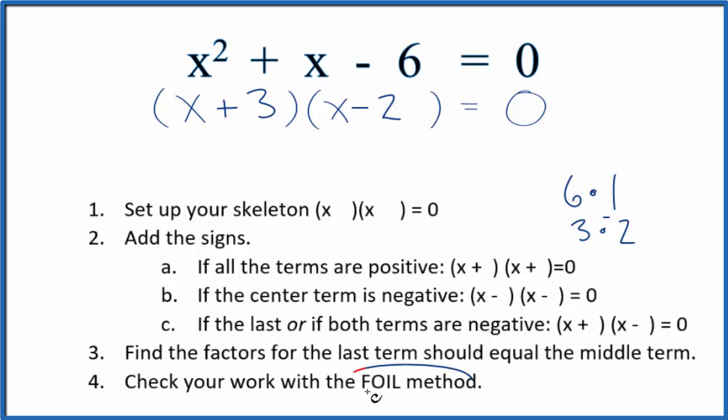Now I can check my work with the FOIL method. First term: x², outside: x times -2 is -2x, inside is 3x, and the last term: 3 times -2 is -6. All that equals 0. Let's put these together: -2x plus 3x gives us a positive x. This is the same as we have above, x² + x - 6. So we've done this correctly.